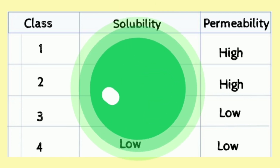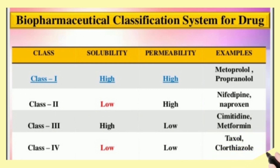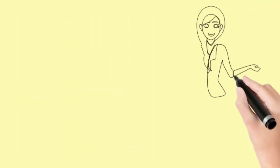For examples: Class 1 drug is metoprolol, Class 2 is nifedipine, Class 3 is ranitidine, and Class 4 is Taxol, which is an anti-cancer drug. If someone asks what Class 1 drugs are like, you can easily say high solubility, high permeability. If asked which class has high solubility and low permeability drugs, you can say Class 3.